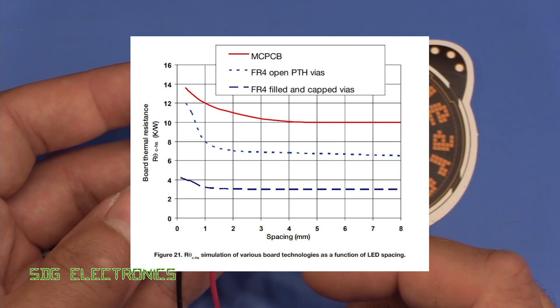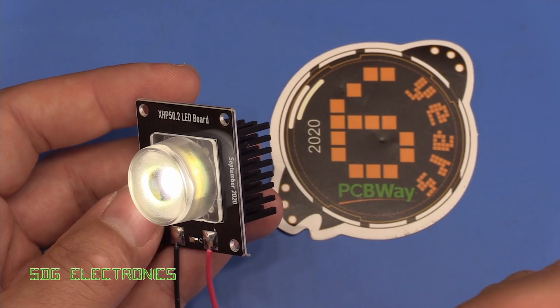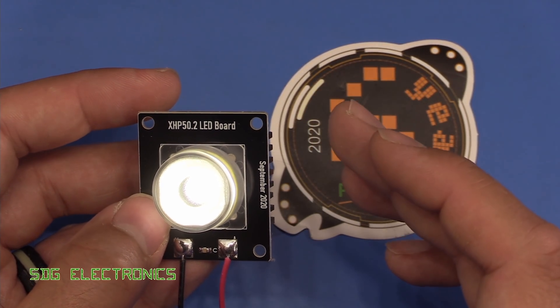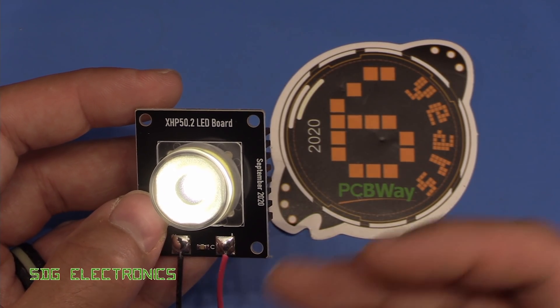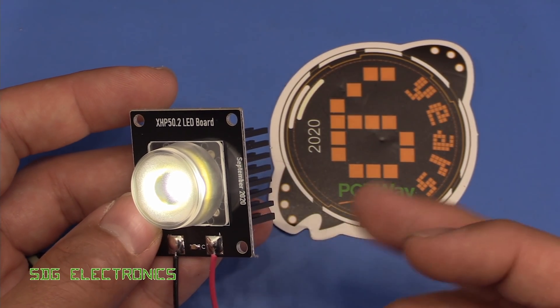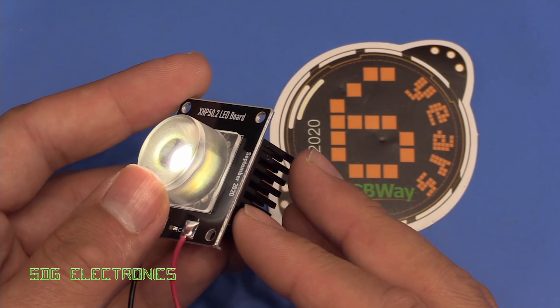Now that doesn't mean that there aren't applications where an aluminium PCB are preferable. So certainly, if your PCB is going to be more densely populated, it may be that you can't have those thermal vias on there. Or it may be more cost effective if there's a whole cluster of LEDs to use aluminium PCB, as opposed to dealing with all those vias. But I think this has been very interesting.